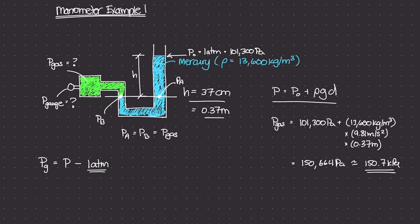Now that's standard — it's always 1 atm. In this case our p₀ is equal to 1 atm, but remember p₀ is just whatever initial pressure you're using to start measuring h with. So gauge pressure is always the pressure minus 1 atm. The gas pressure we found is 150.7 kilopascals minus 1 atm, which is 101.3 kilopascals. So the gauge pressure would simply read about 49.4 kilopascals.